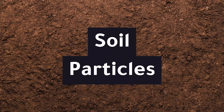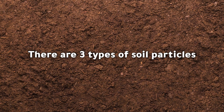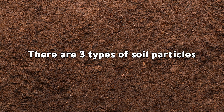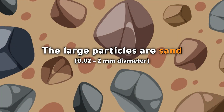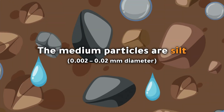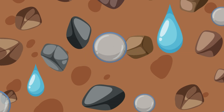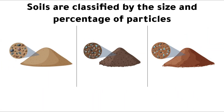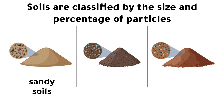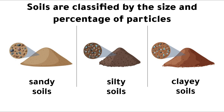Soil particles: there are three types of soil particles. The large particles are sand, the medium particles are silt, and the small particles are clay. Soils are classified by the size and percentage of particles; they include sandy soils, silty soils, and clay soils.